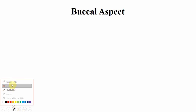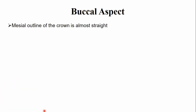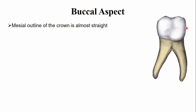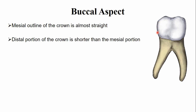Now let's discuss the key identification features of this tooth from the buccal aspect. The mesial outline of the crown is almost straight, while the distal outline below the contact area converges towards the cervical portion of the crown. There is convergence from the contact area to the cervical area on the distal side. The height of the distal portion is shorter compared to the mesial portion of the crown, which is a bit higher.